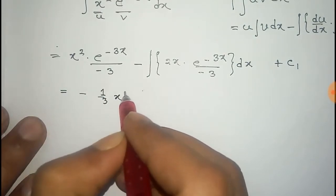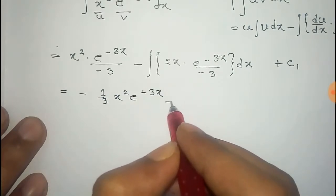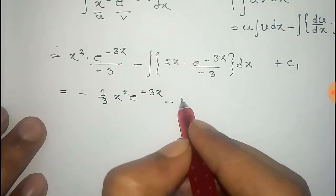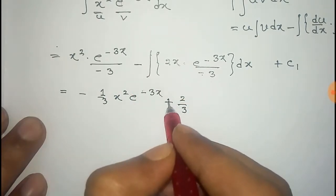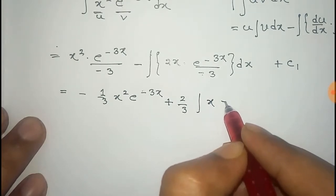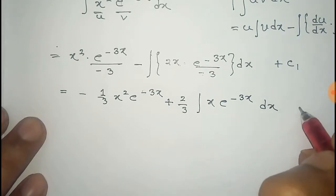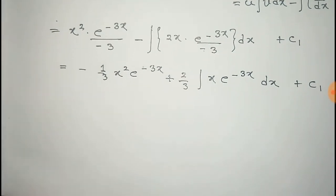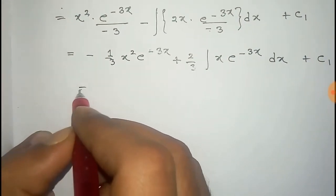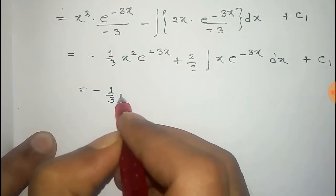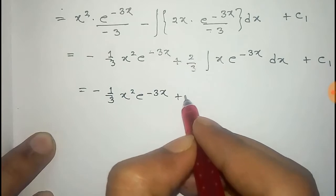That gives us minus one third x squared e to the power minus 3x, minus the constant 2 by 3 times the remaining integral of x e to the power minus 3x dx, plus constant c1.